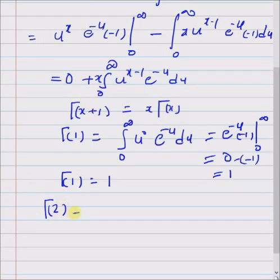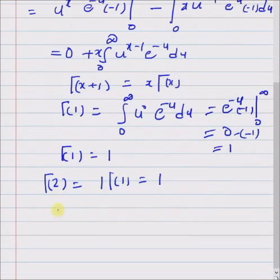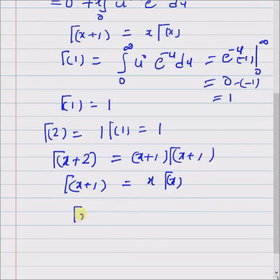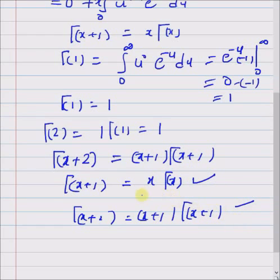Gamma(2): with x=1, a valid positive integer, we have 1 times gamma(1), which is 1. Next, we prove that gamma(x+2) equals (x+1) times gamma(x+1). Since we already know gamma(x+1) = x times gamma(x), substituting x with x+1 gives gamma(x+2) = (x+1) times gamma(x+1). Hence by this proposition, the result is always implied by induction.